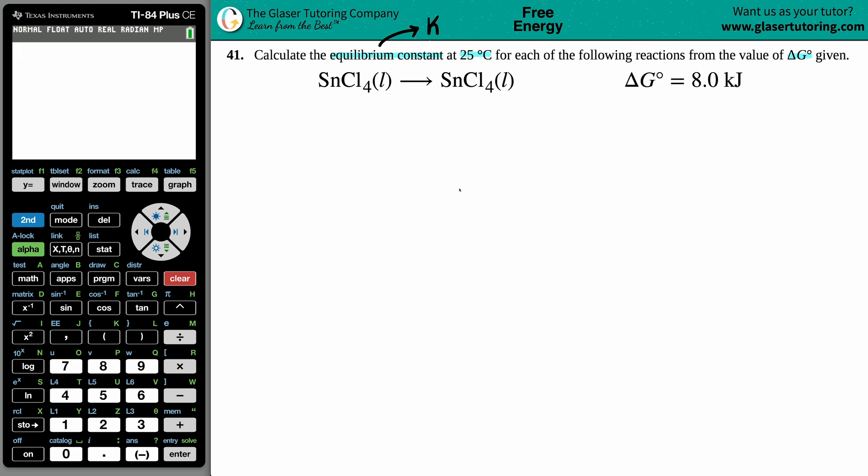K equals e raised to the negative delta G over RT. Let's start with the R value. That's a constant value. R is 8.314 in this case.